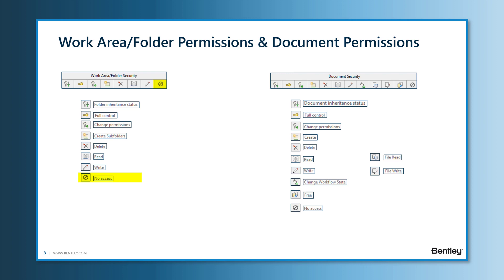No Access takes precedence over all other folder permissions. This means we don't even know that the folder actually exists — when we run a search, the folder won't show up in the search results, even if it satisfies the search criteria. This is the most restrictive way of preventing an individual from viewing a folder and its subfolders. Once this is checked, there is no other method to allow users to view the folder unless this option is unchecked.